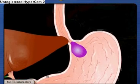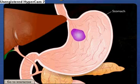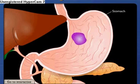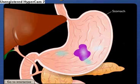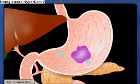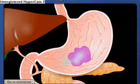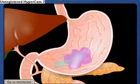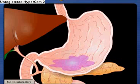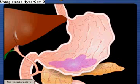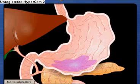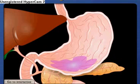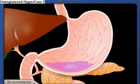The bolus now enters the stomach. Folds in the stomach wall called rugae allow for expansion as the stomach fills. Stomach cells secrete hydrochloric acid, pepsinogen, and various regulatory hormones that chemically digest the bolus. Muscular contractions in the stomach churn its contents to further break down the bolus and mix it with stomach secretions to form a thick liquid called chyme.